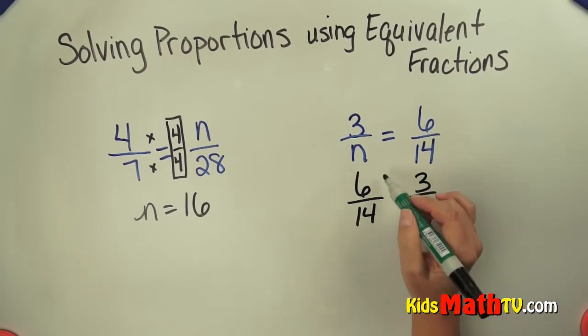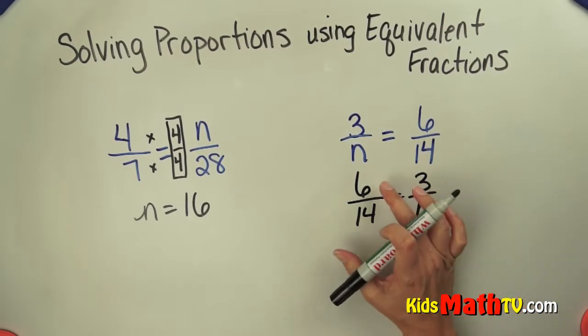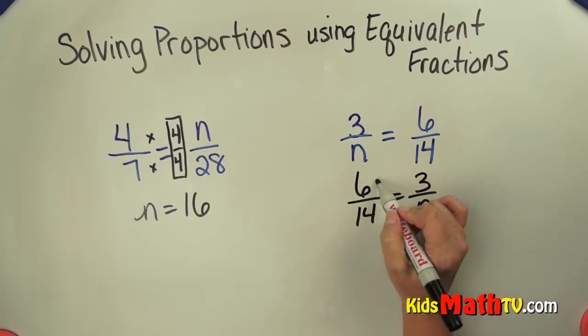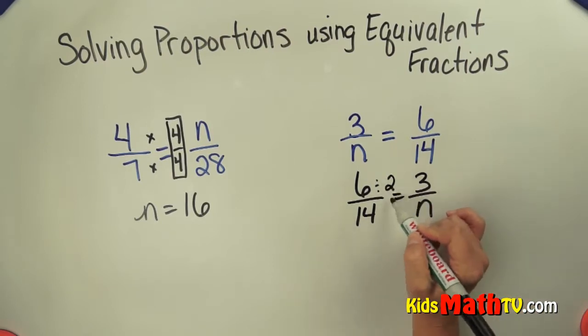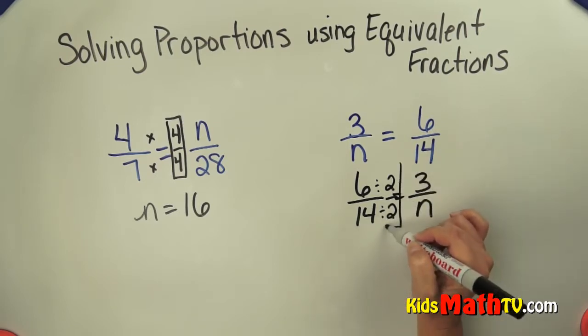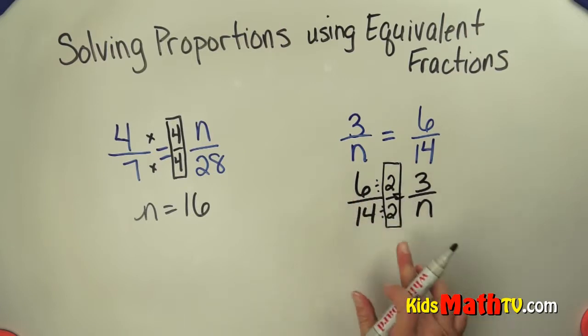I'm going to do that so I can show my work. In this case, I'm going to divide. I know I can get from 6 to 3 by dividing by 2. If I divide by 2 on the top, I have to divide by 2 on the bottom. That's my magic 1, so I'm dividing this whole ratio by 1.